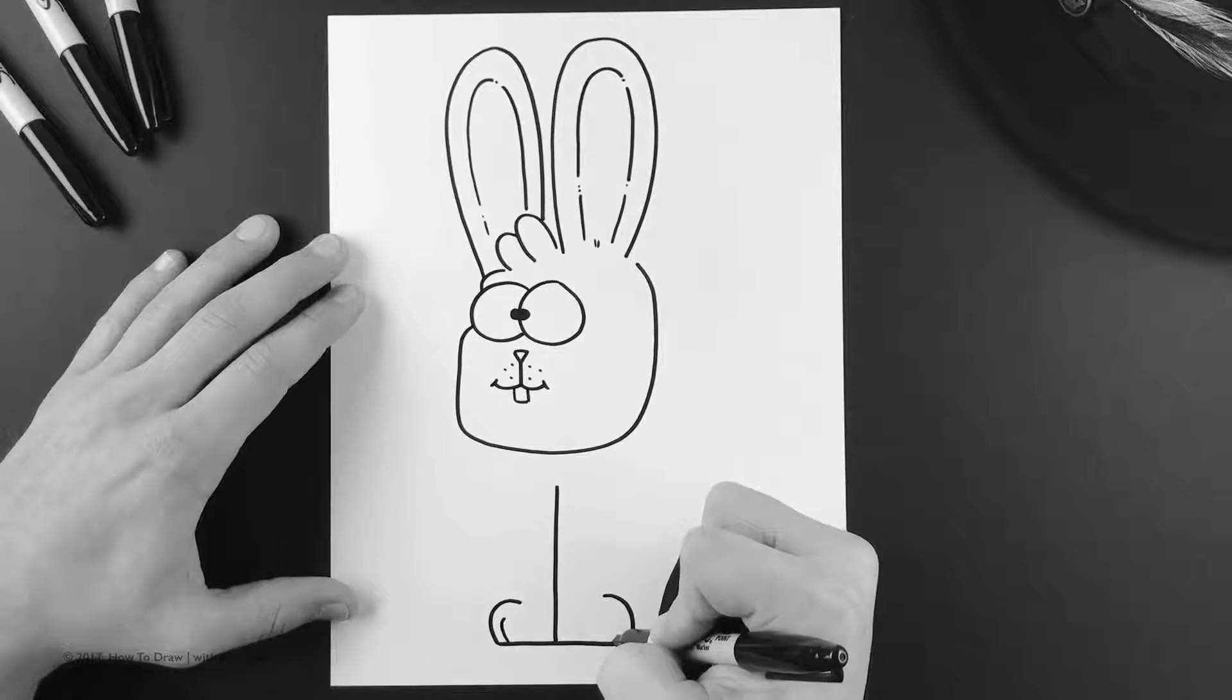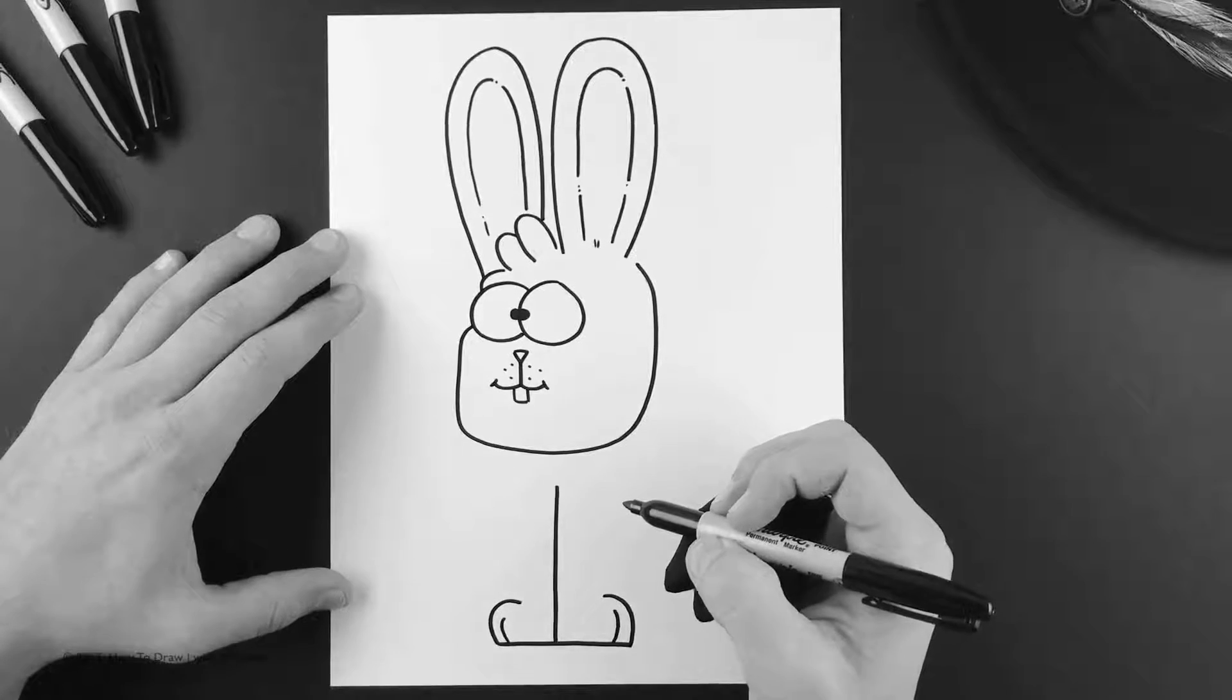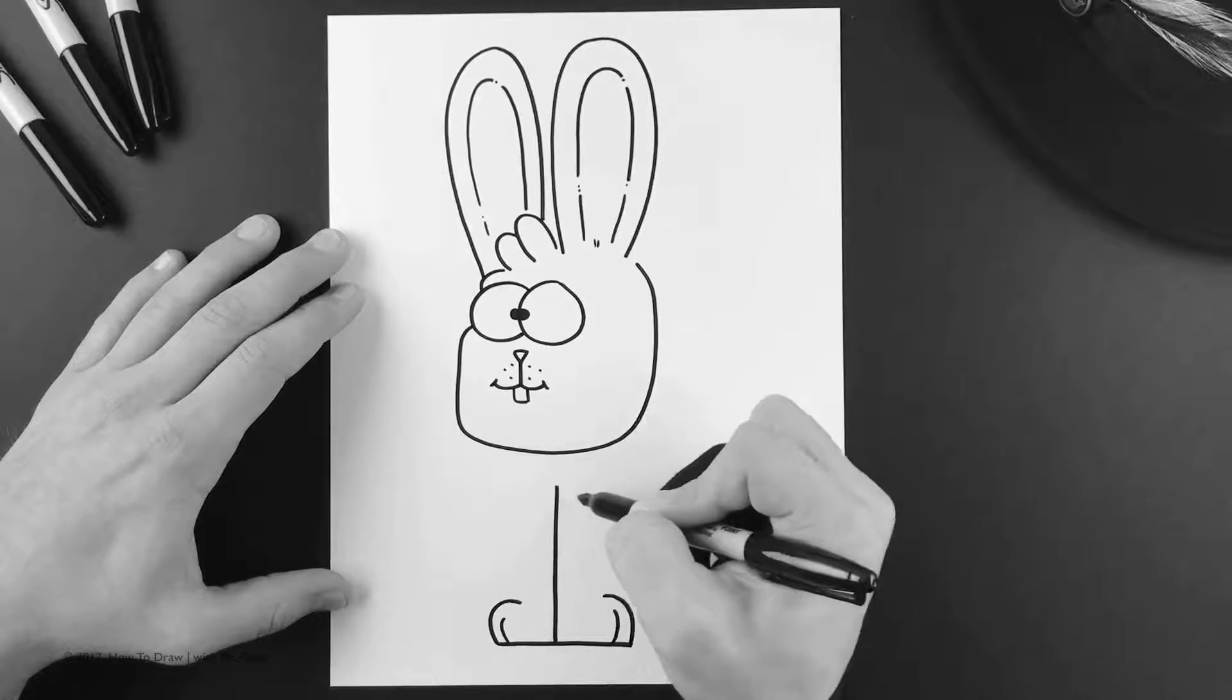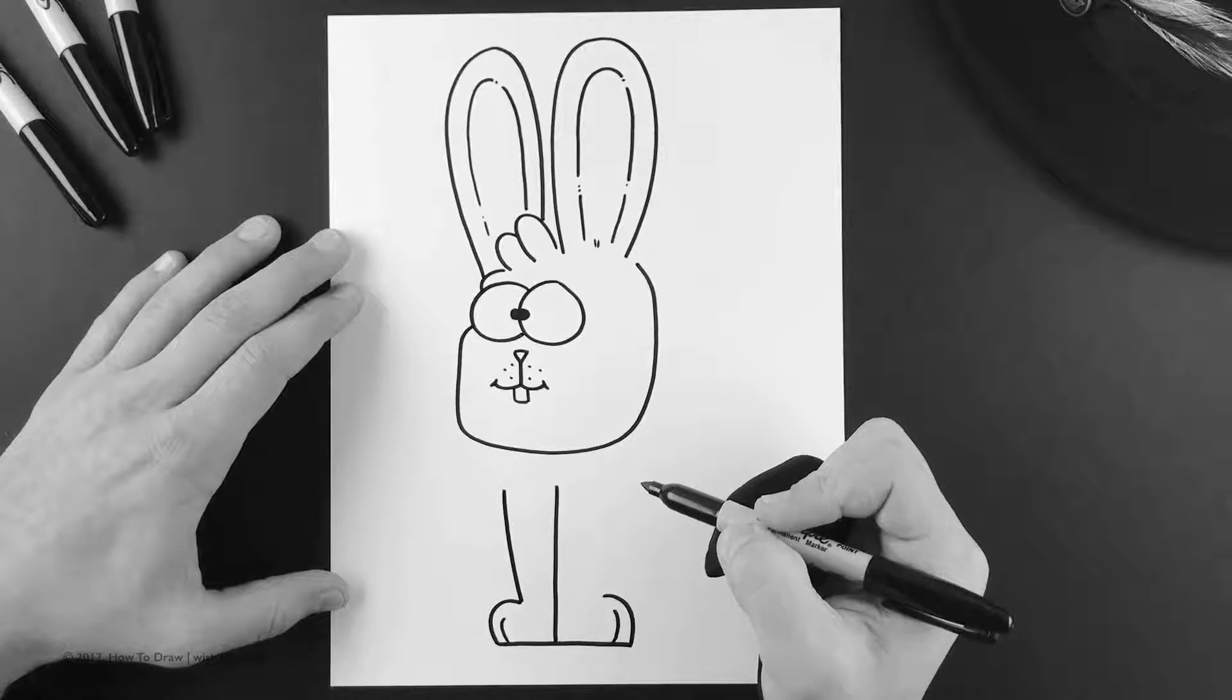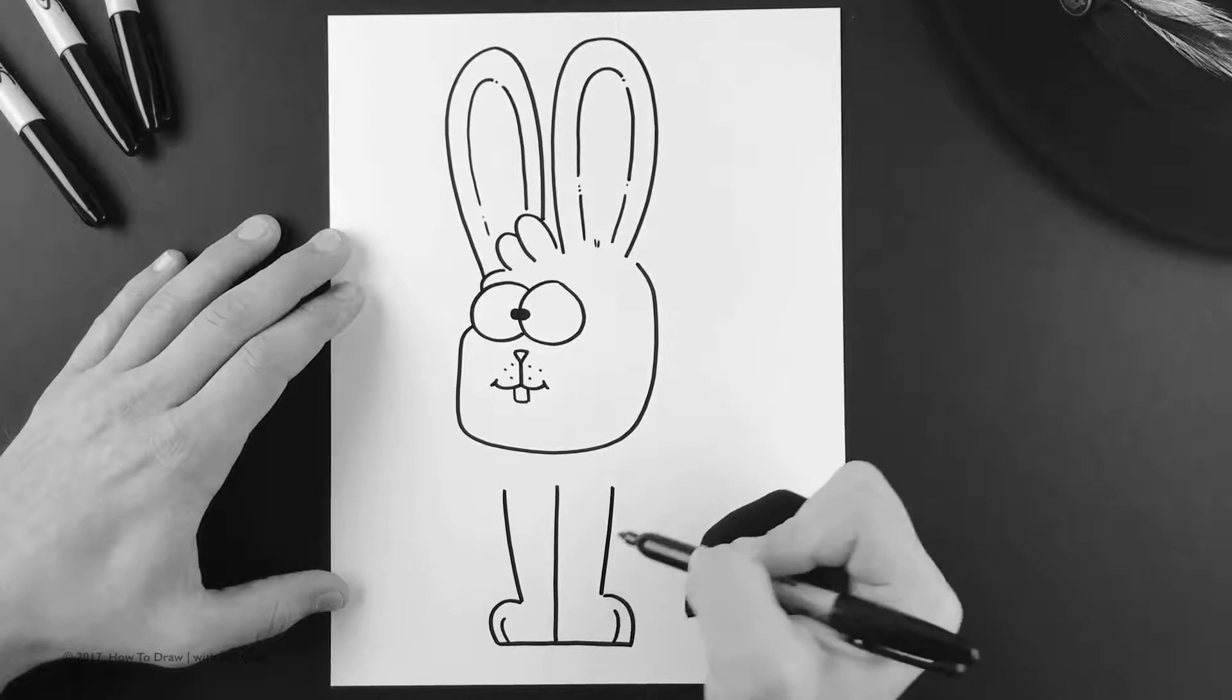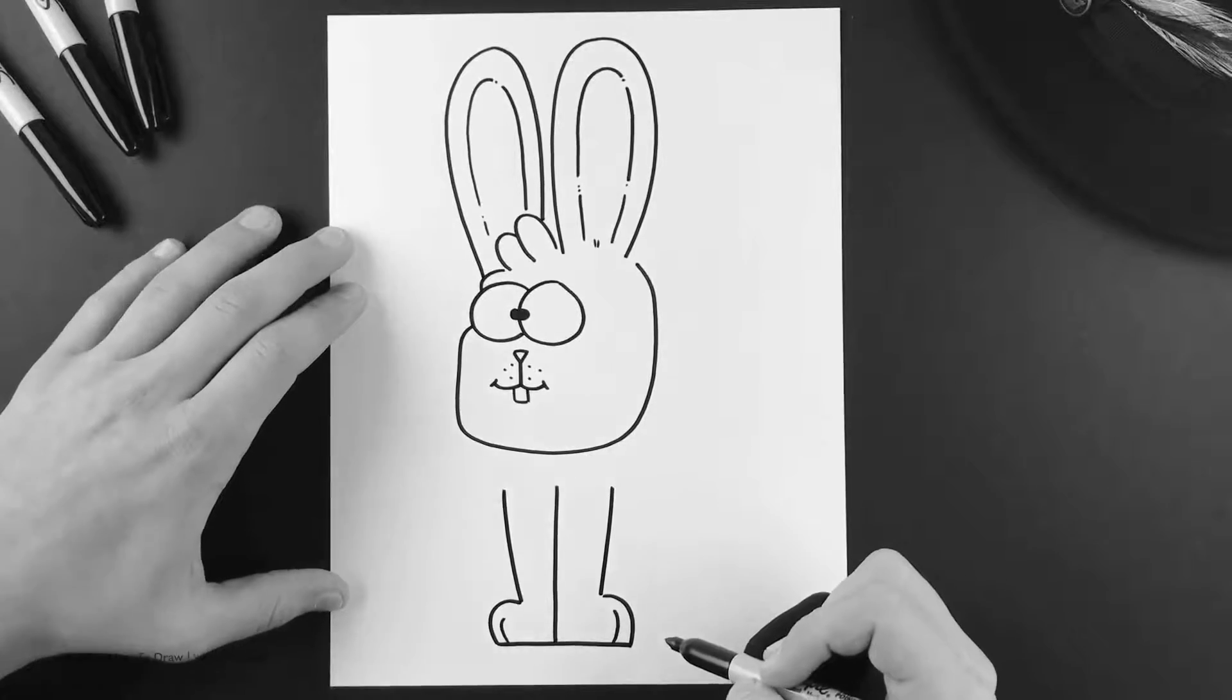And add little marks like that. So now level with this line we're gonna add a line coming down and into that paw. Same thing over here.